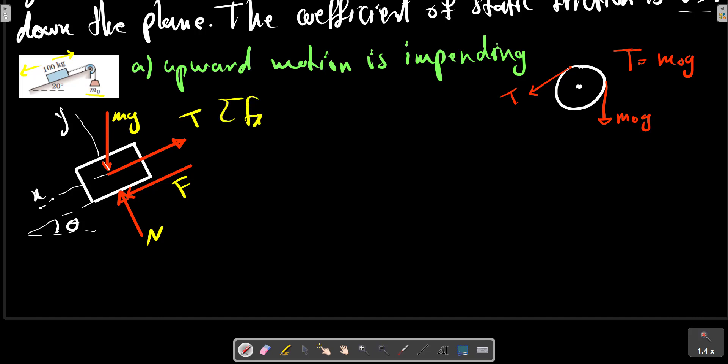Sigma Fx equals zero. X is in direction mg sin theta. In the direction of positive x, mg sin theta minus T plus F equals zero, and mg sin theta minus m0*g plus F, which is mu_s*N, equals zero.